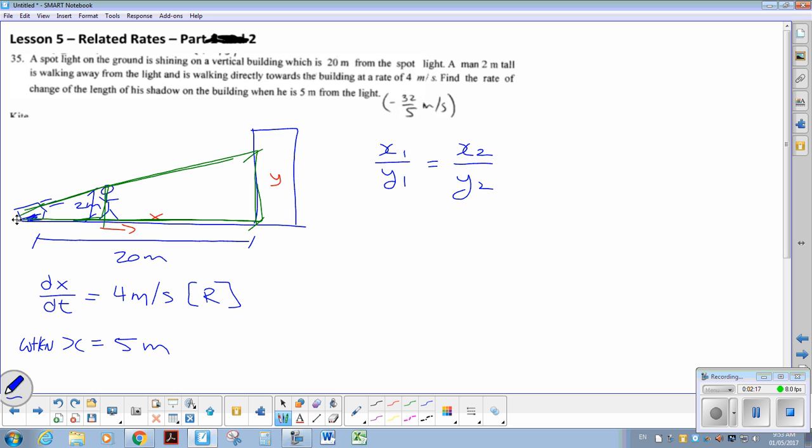For my large triangle, the bottom is 20 meters away. And y1 is unknown. x2, from my small triangle, would be 2 meters. The man isn't going to change height.